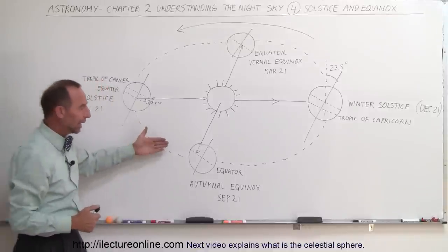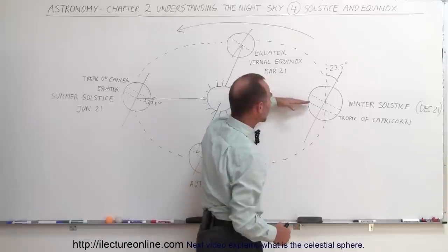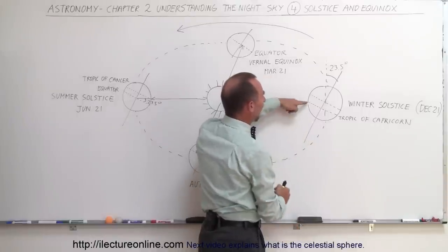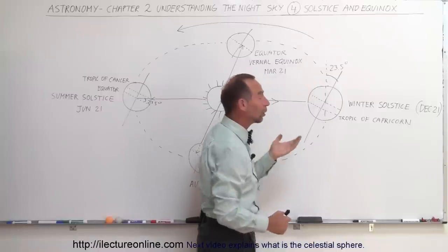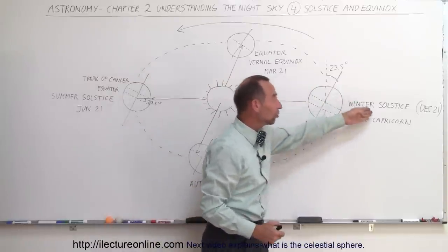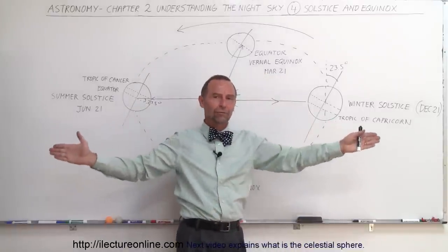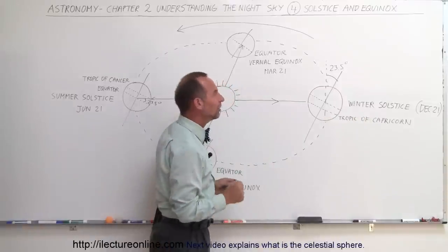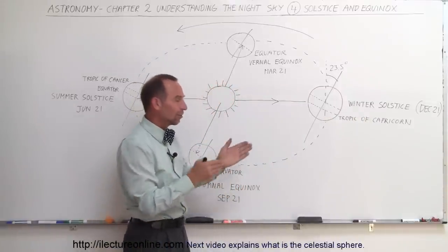Three months after the autumnal equinox, the sun will shine directly perpendicular to the surface of the earth at the Tropic of Capricorn, which is 23 and a half degrees below the equator. This is called the winter solstice — the beginning of winter. That's when the sun rises and sets furthest north along the horizon, as observed over thousands of years.